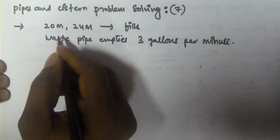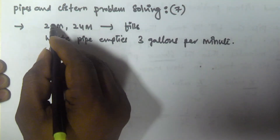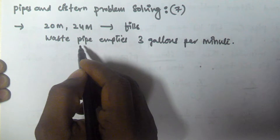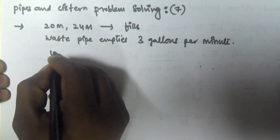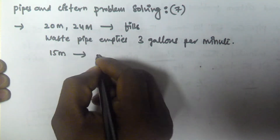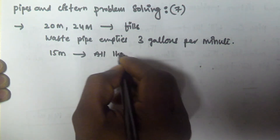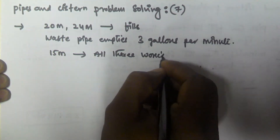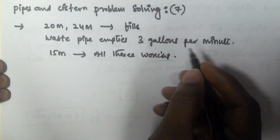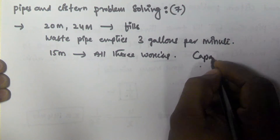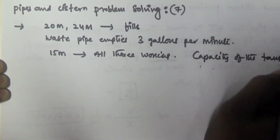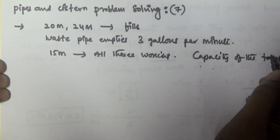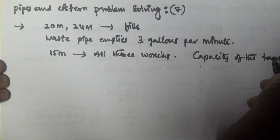All three pipes are working together — two filling pipes and one waste pipe. When all three are open, they can fill the tank in 15 minutes. We have to find the capacity of the tank.